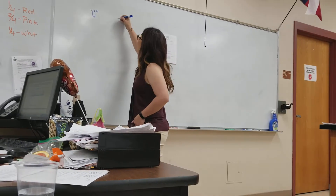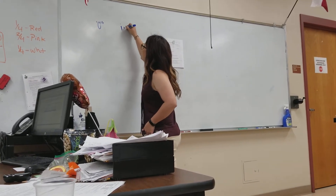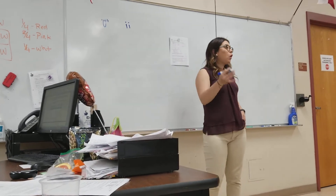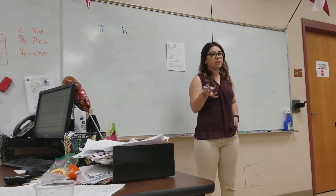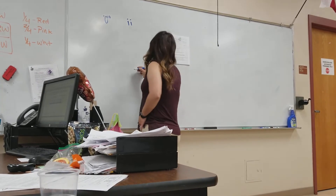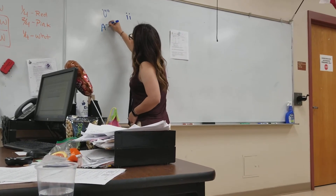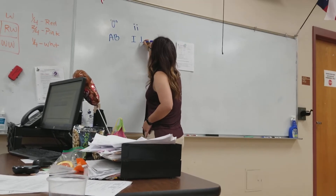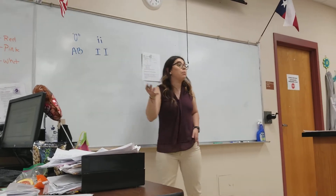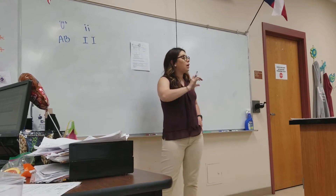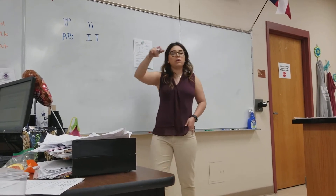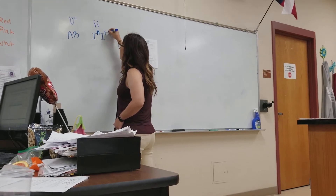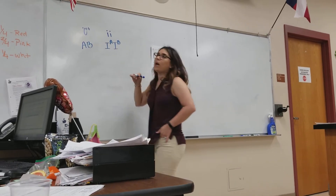For type O, your genotype is always going to be two lowercase i's, because in order to have an O blood type it must be homozygous recessive. For AB, because of co-dominance, you're going to have a capital I with a superscript or exponent to dictate the protein — so you'll have one capital A and one capital B.